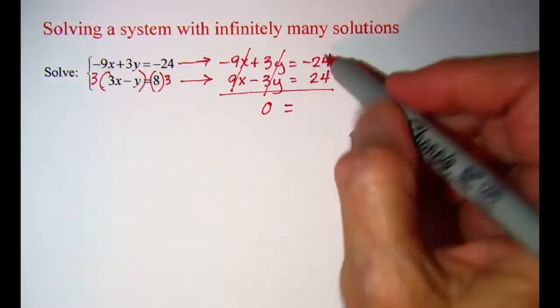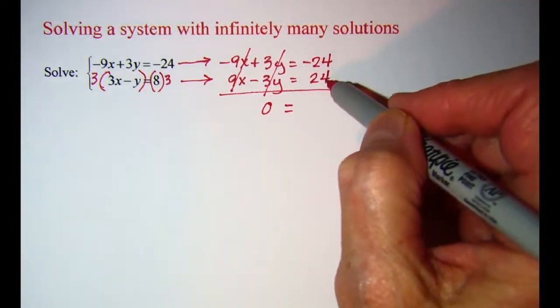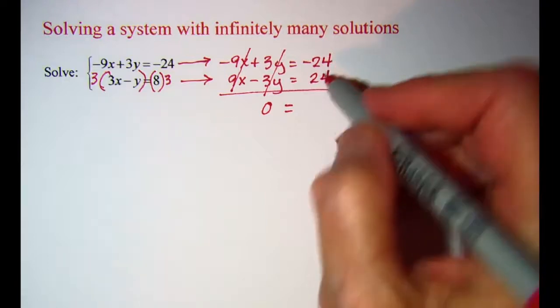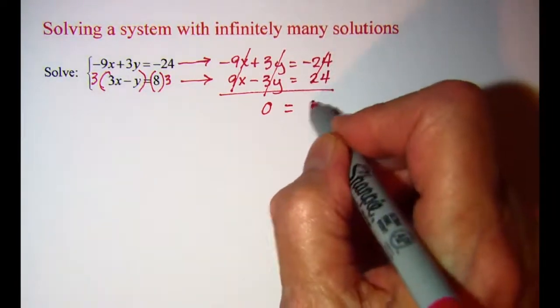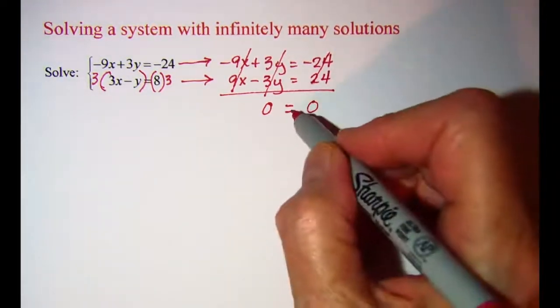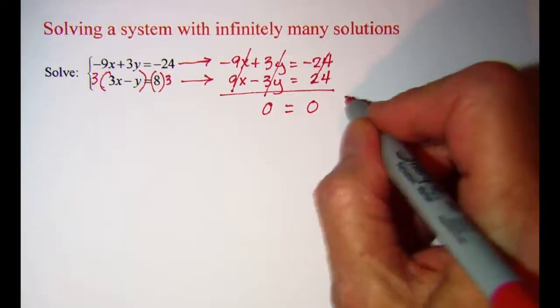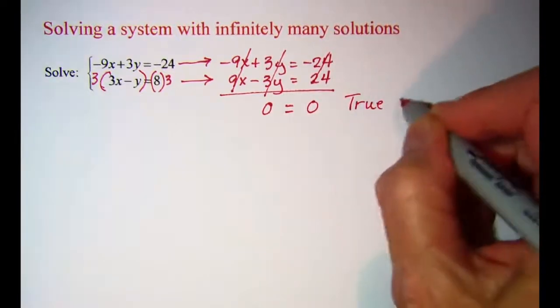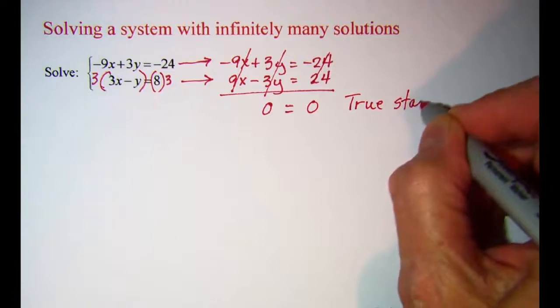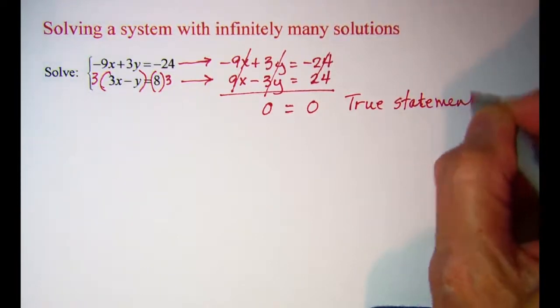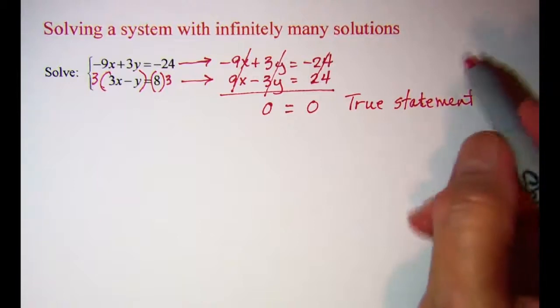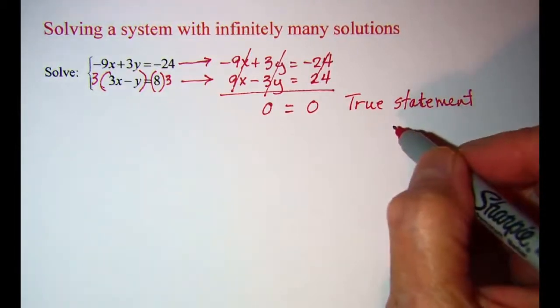On the right side, I have negative 24 and positive 24. Those also cancel, so I have a 0 here. This is a true statement. Therefore, infinitely many solutions.